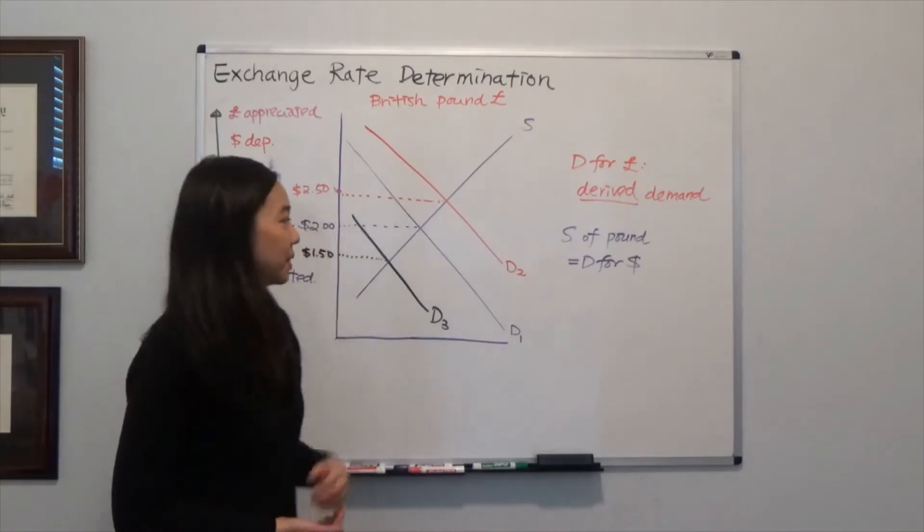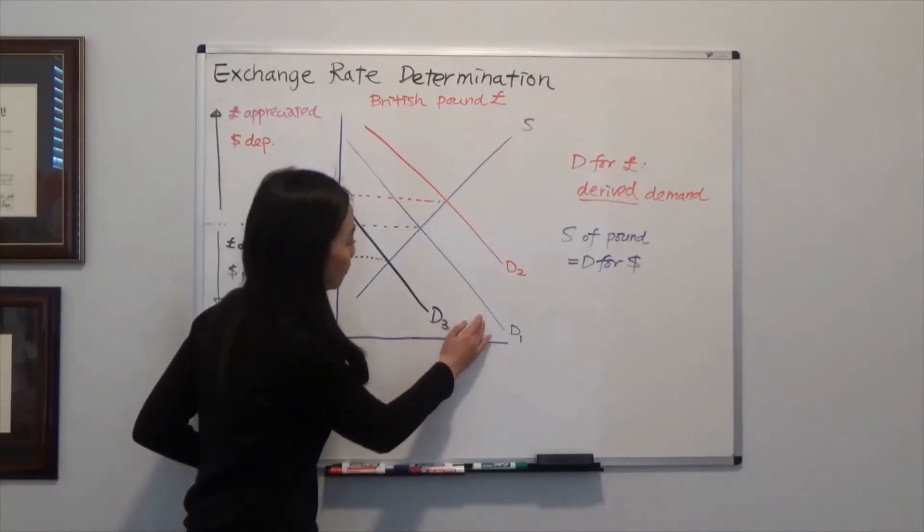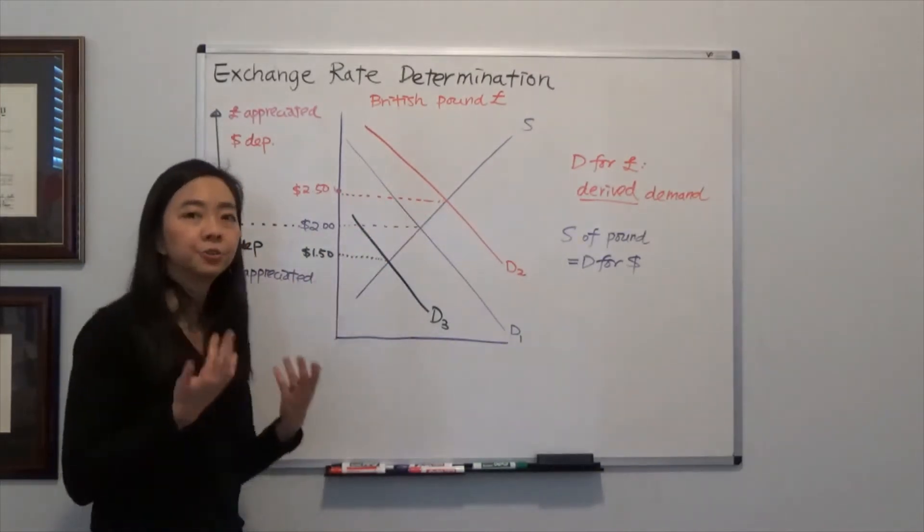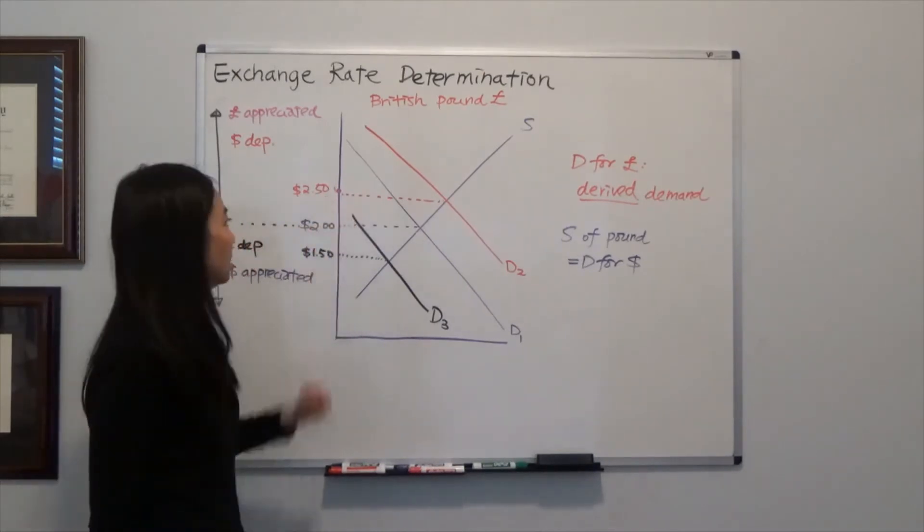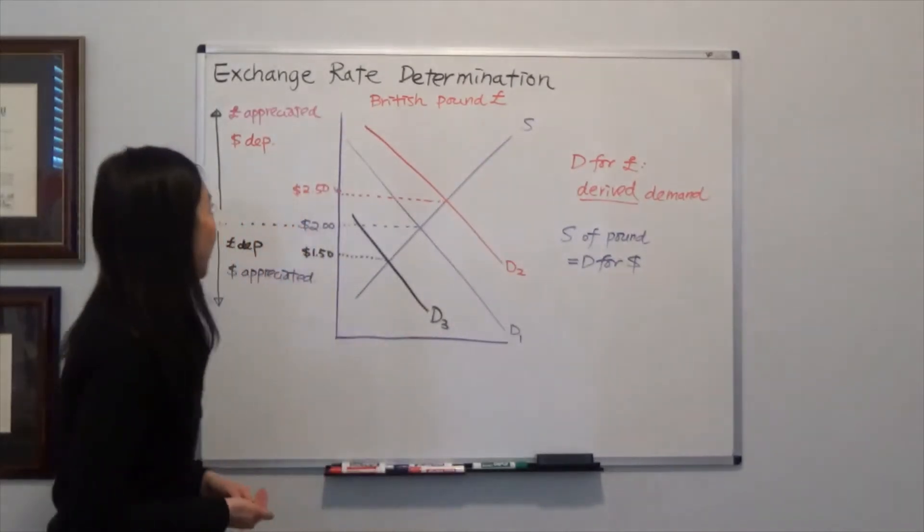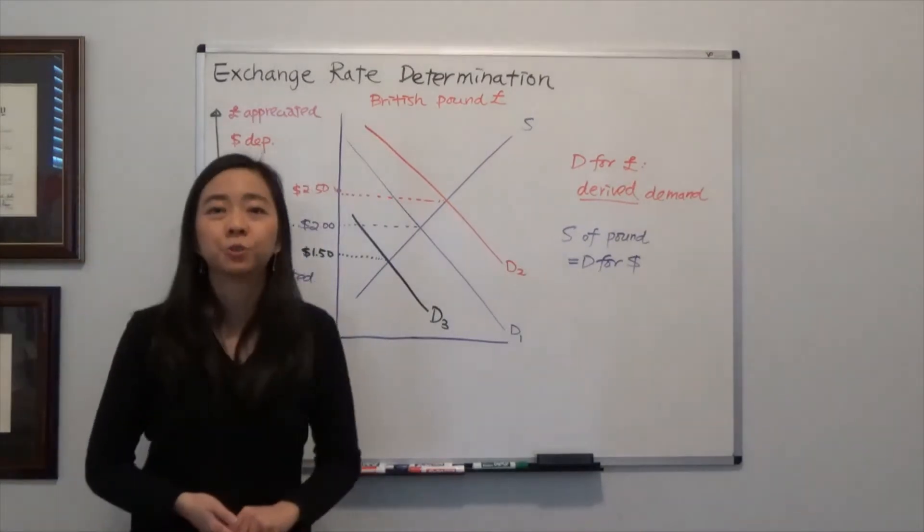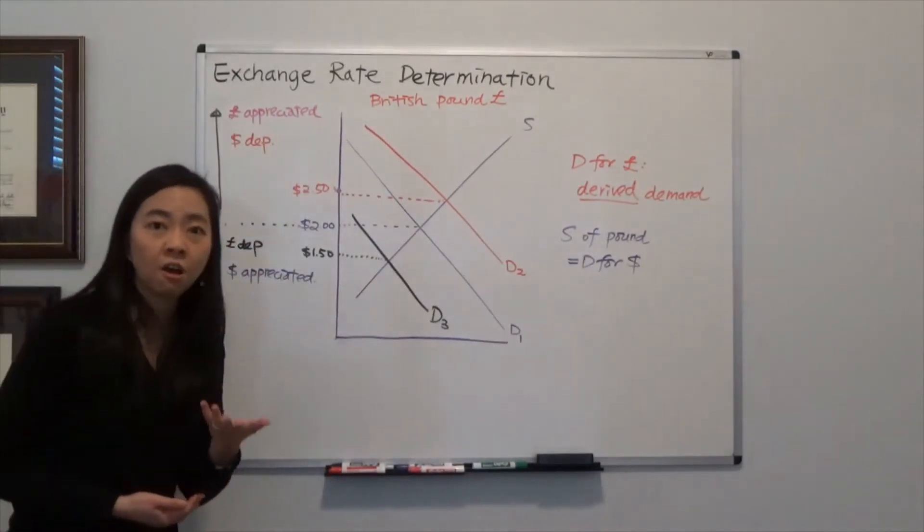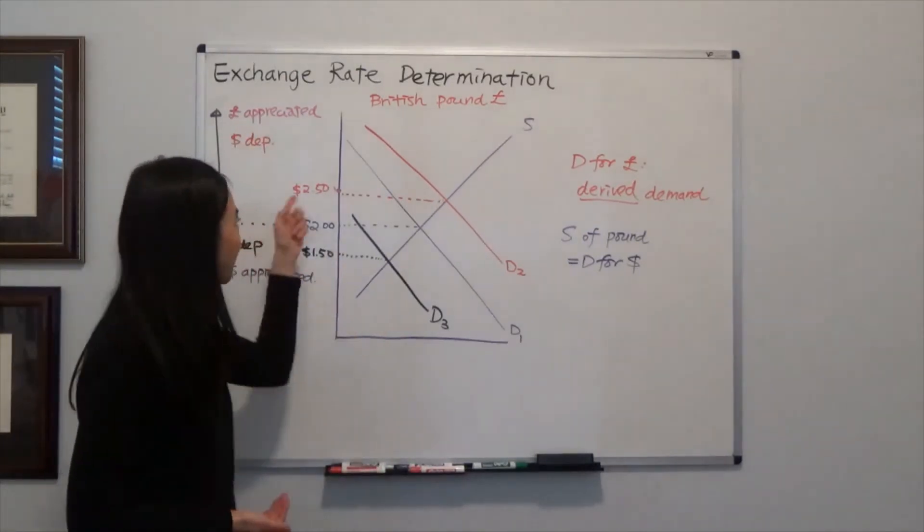Now suppose there's an increase in demand for the British Pound. That will shift our demand curve for the Pound to the right, and therefore the price of the Pound has increased from two dollars per pound to two dollars and fifty cents per pound. The British Pound has become more expensive, or we can say the Pound has appreciated against the dollar. Alternatively, we can say the dollar has depreciated against the Pound because it now costs more dollars to buy one pound.